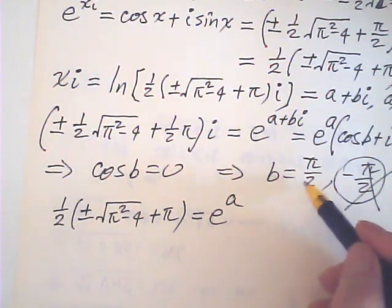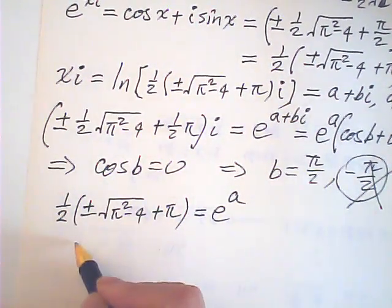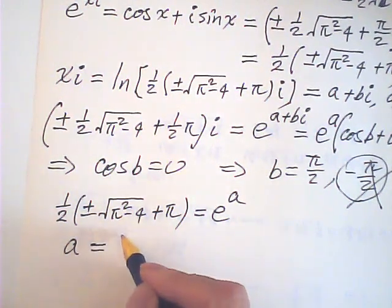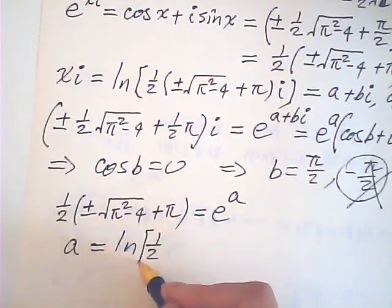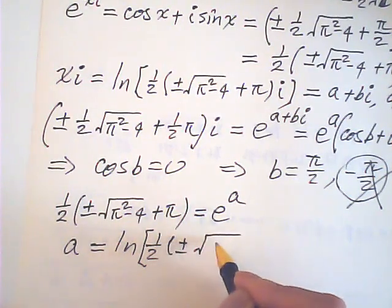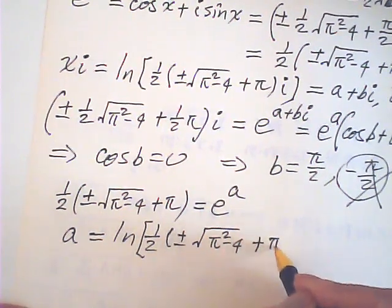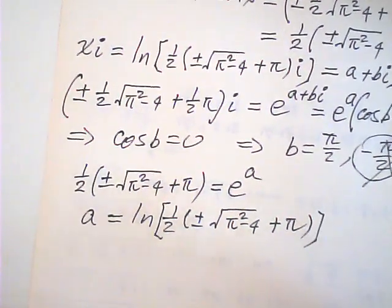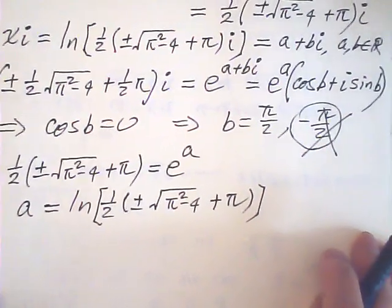b could only be half pi. And from this, a is equal to log of one half times plus or minus square root pi squared minus 4 plus pi.